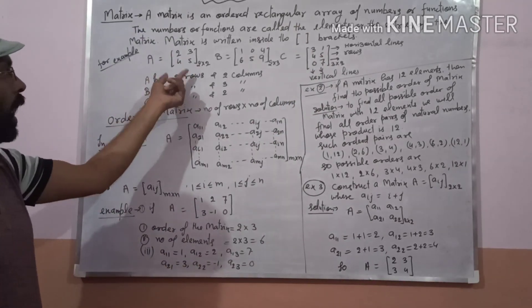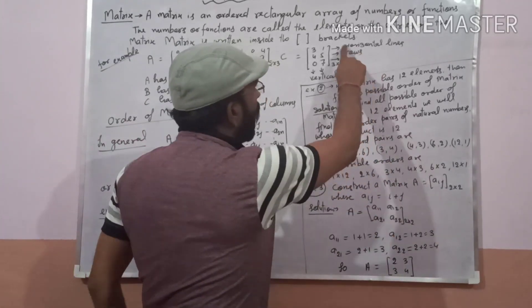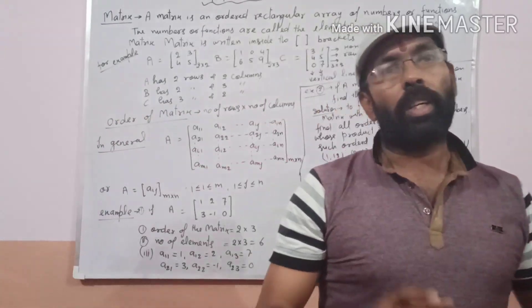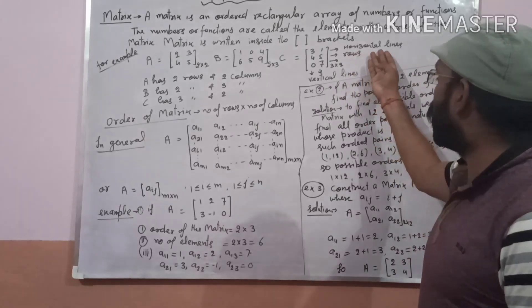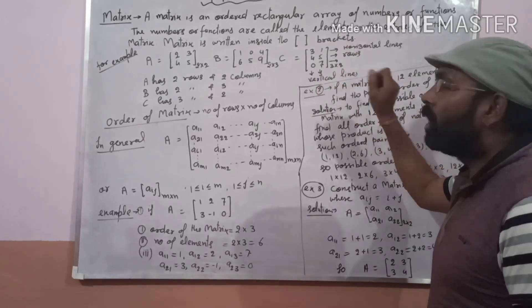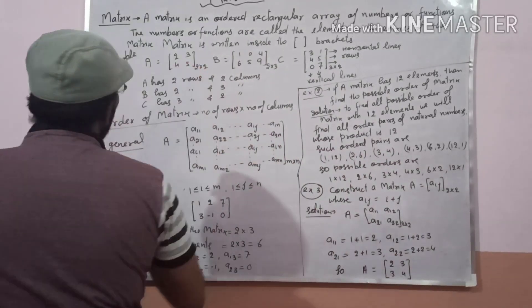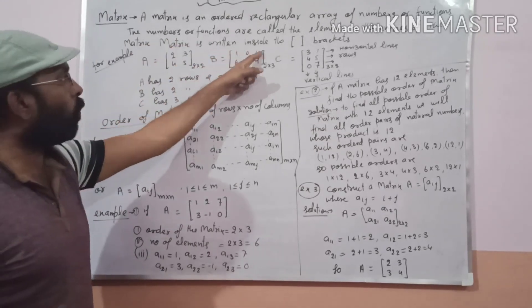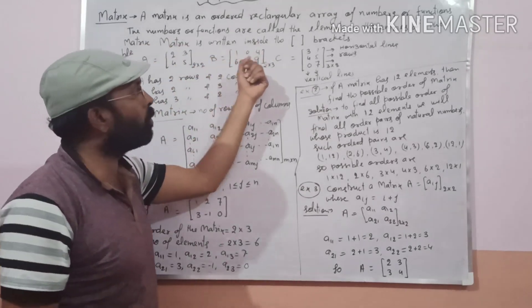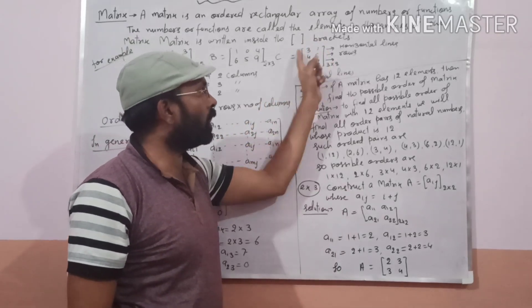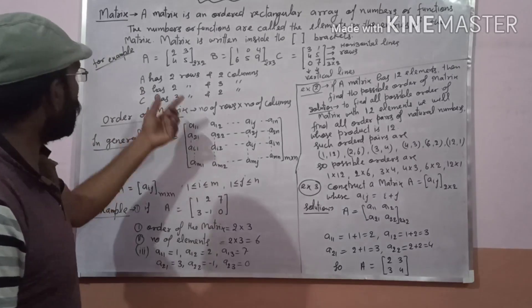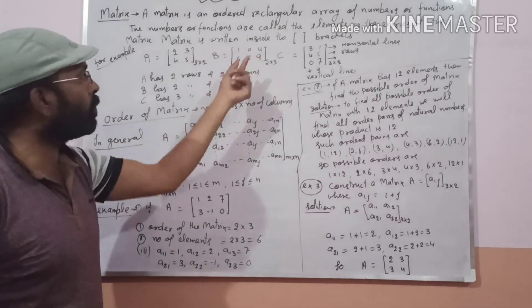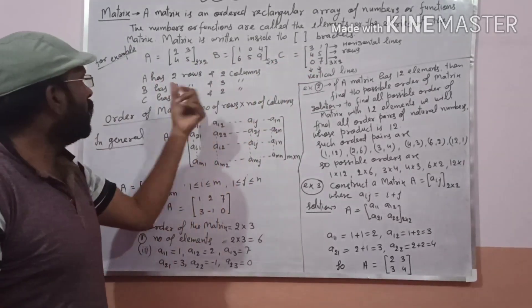Horizontal lines are called rows and vertical lines are called columns. So A has 2 rows and 2 columns, B has 2 rows and 3 columns, and C has 3 rows and 2 columns.